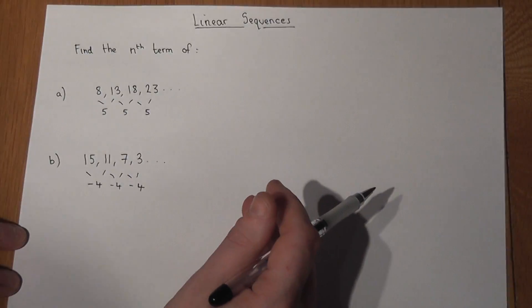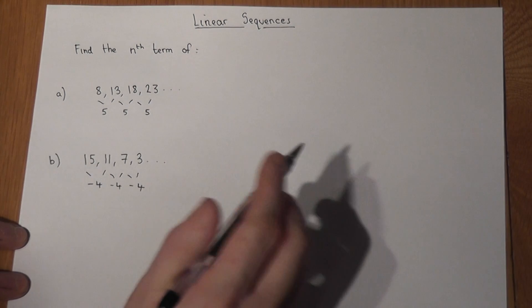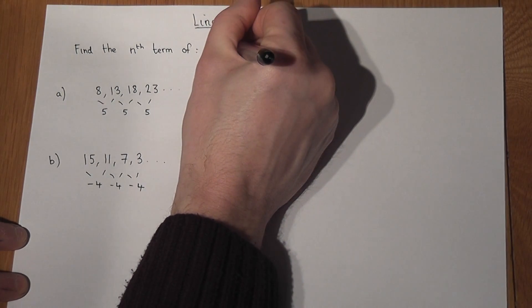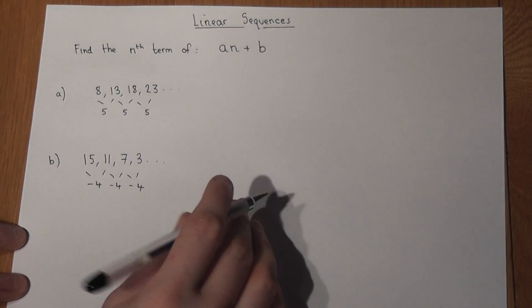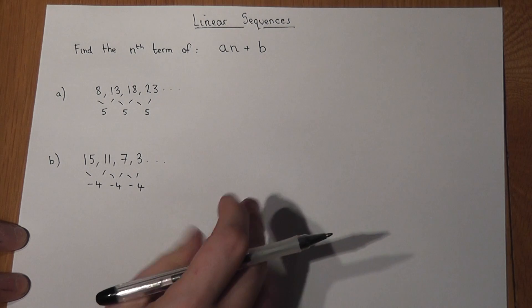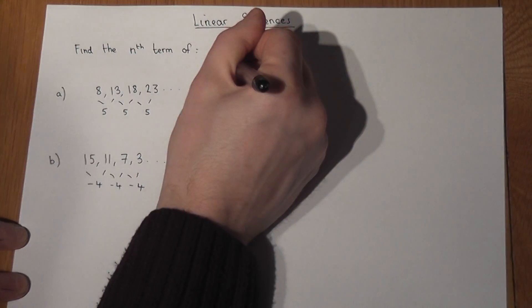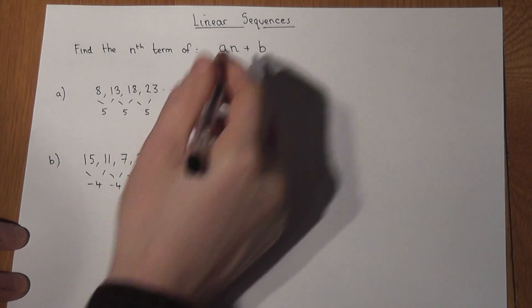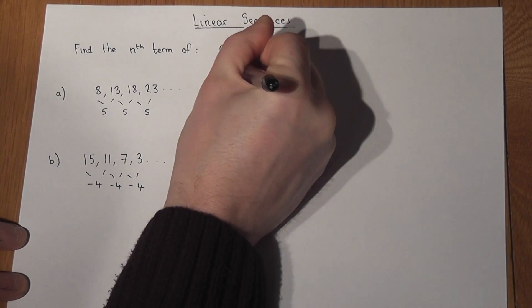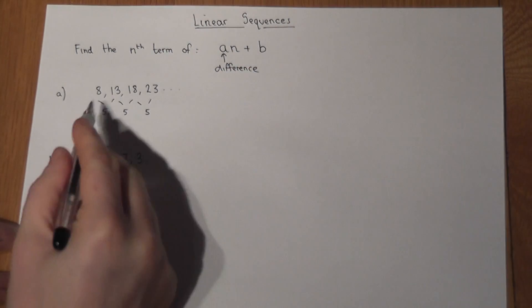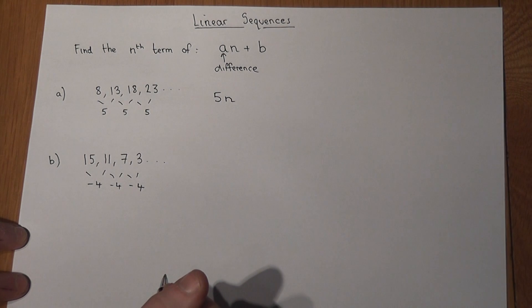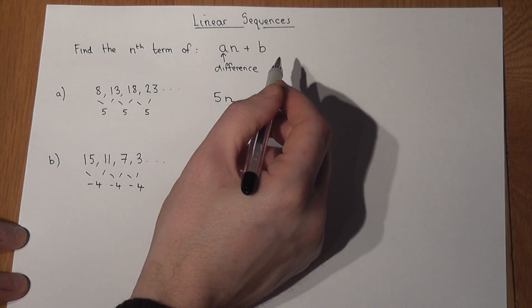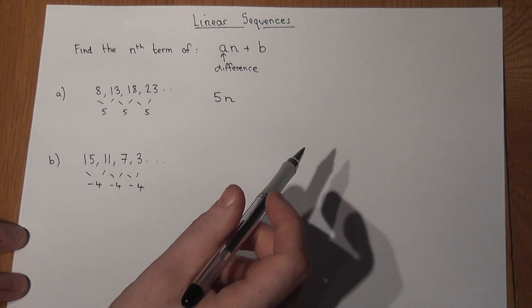There's a very easy way to find what's called the nth term, or the formula for the sequences. Generally, an nth term is always of the form an + b, where a and b are two numbers linked to the sequence. The value of a is always the constant difference, so in the first sequence it must be of the form 5n.